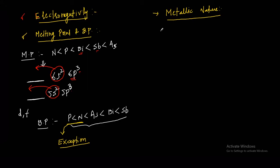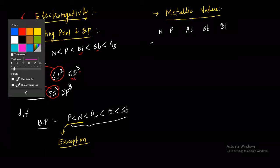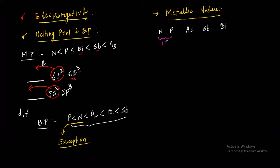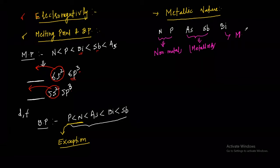The group 15 elements are nitrogen, phosphorus, arsenic, antimony, and bismuth. The first two — nitrogen and phosphorus — are non-metals. Arsenic and antimony are metalloids, also called semi-metals. Bismuth has very weak ionization energy and behaves as a metal.